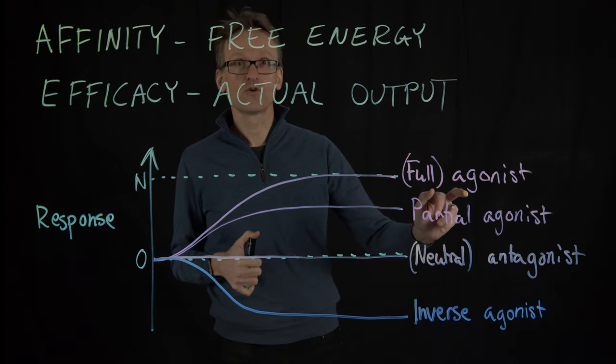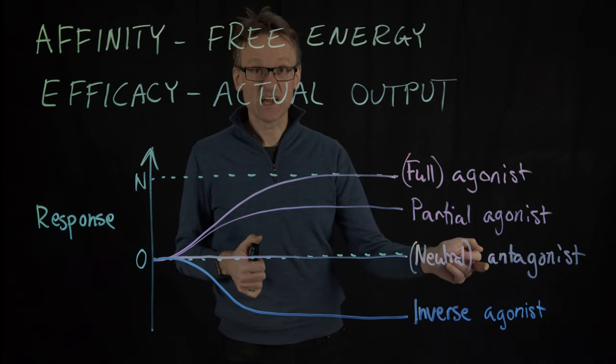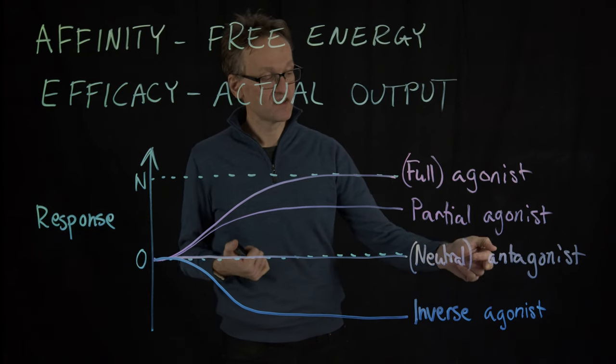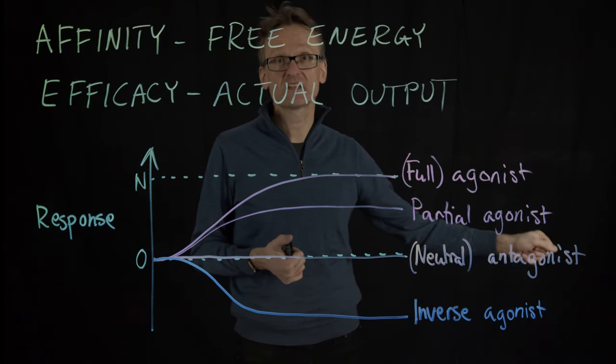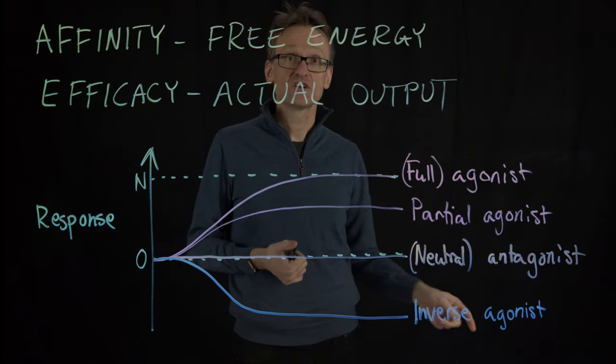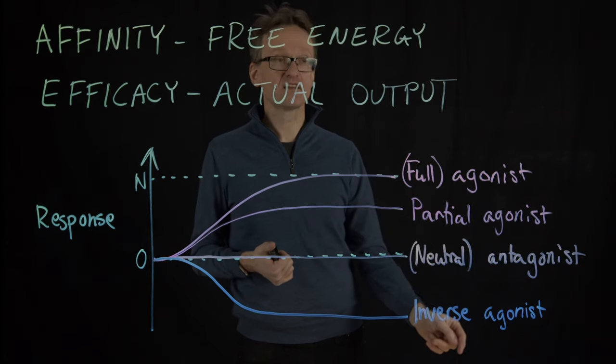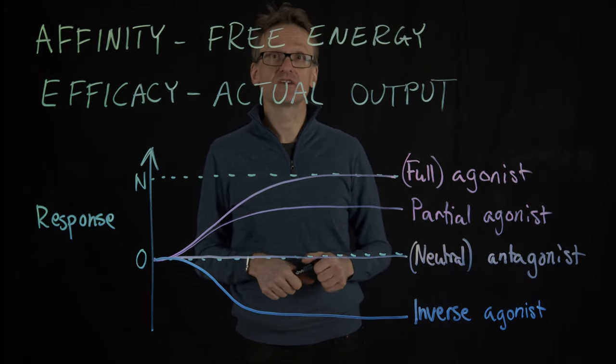So an inverse agonist does the opposite of the normal agonist process. Agonist, full normal process. Antagonist stops that process from happening. Inverse agonist explicitly goes in the opposite direction. So both these agonists create an effect while an antagonist merely stops the effect.